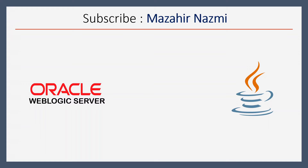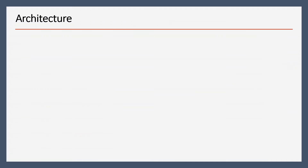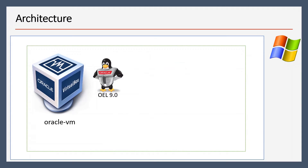Welcome to my channel. In this video we are going to install Oracle WebLogic Server 14c and we will also cover Java 11 installation. Let's quickly see the architecture — we have one virtual machine which we have created in VirtualBox, on top of it we are running Oracle Linux 9.0. If you want to see how to create a virtual machine or install Oracle Linux, you can refer to my previous videos — I will put those links in the description.